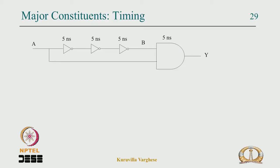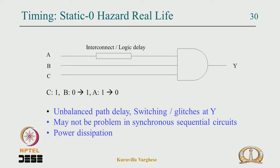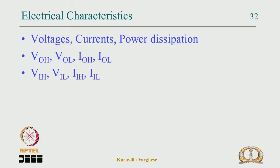We looked at hazards, where unexpected outputs produce glitches. There is static-0 hazard and static-1 hazard; in a sequential circuit this is not a problem because we latch the output after settling. But in real life, unbalanced path delays at the input of an AND or OR gate can cause glitches, so one has to wait for them to settle before latching. You can also have a dynamic hazard where a single input change causes multiple glitches at the output.